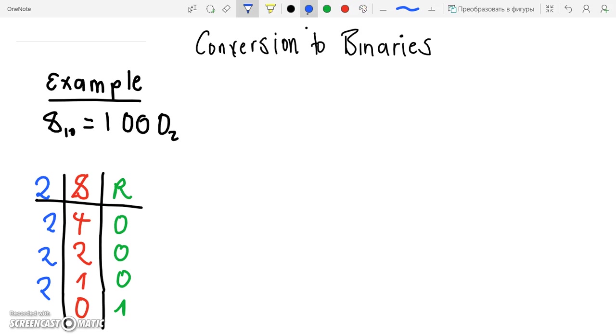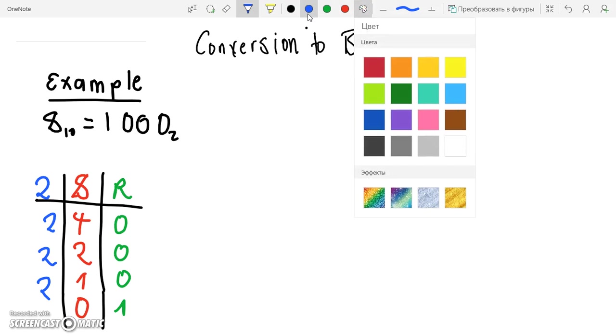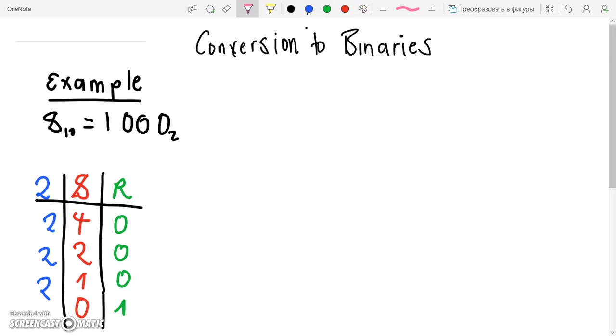I'm just labeling them. So it's 8 divided by 2 is 4 remainder 0, 4 divided by 2 is 2 remainder 0, 2 divided by 2 is 1 remainder 0, and 1 divided by 2 is 0 remainder 1.